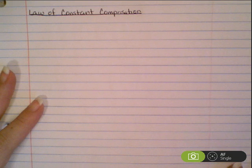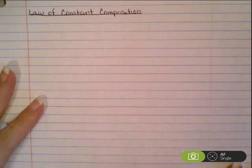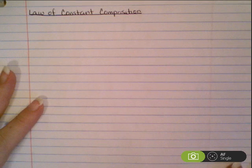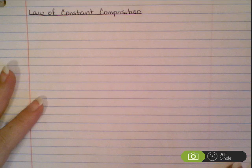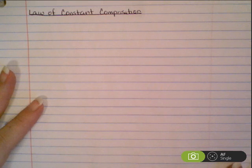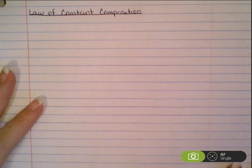We want to look at the Law of Constant Composition. If you recall, the definition says all samples of a given compound have the same proportions of their constituent elements. And you're thinking to yourself, what in the heck does that mean? Let's go over an example to help explain what that means.